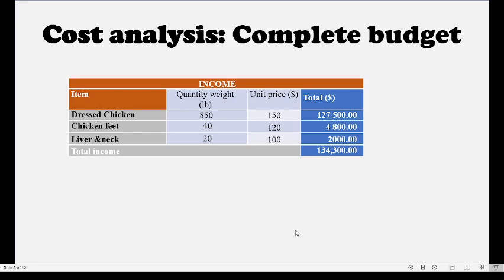This is just showing one income for one set of chickens, but remember you are doing two sets. So you have your dressed chicken, chicken feet, liver, and neck. You have the quantity — that's the weight — the cost per pound, and the total cost, giving your total income for the first set. Below that you'd have the second set.